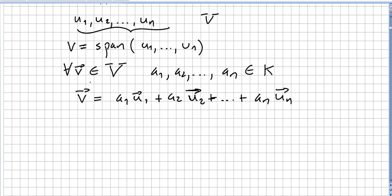So v is a linear combination of u1, u2, ..., un. When this happens, we say that v is in the span, or it generates V.